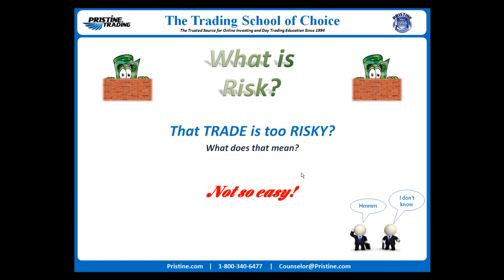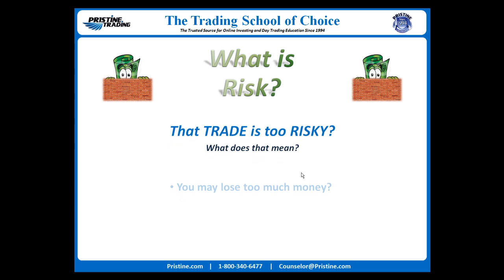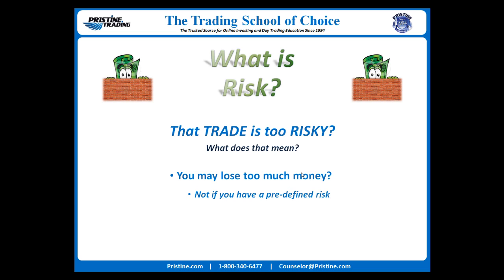But what about when someone says that a trade is too risky, or that one trade is riskier than another? This is a very common statement, but what does it really mean? The first answer most people would give is that it just means you may lose too much money. But wait — we just said that if we define risk as a fixed amount of money on every trade, then that doesn't really make sense. In fact, the risk amount is fixed in stone and is your R unit — the same R used in the risk-to-reward ratio so often discussed. If that is true, how can a certain trade suddenly be risky?